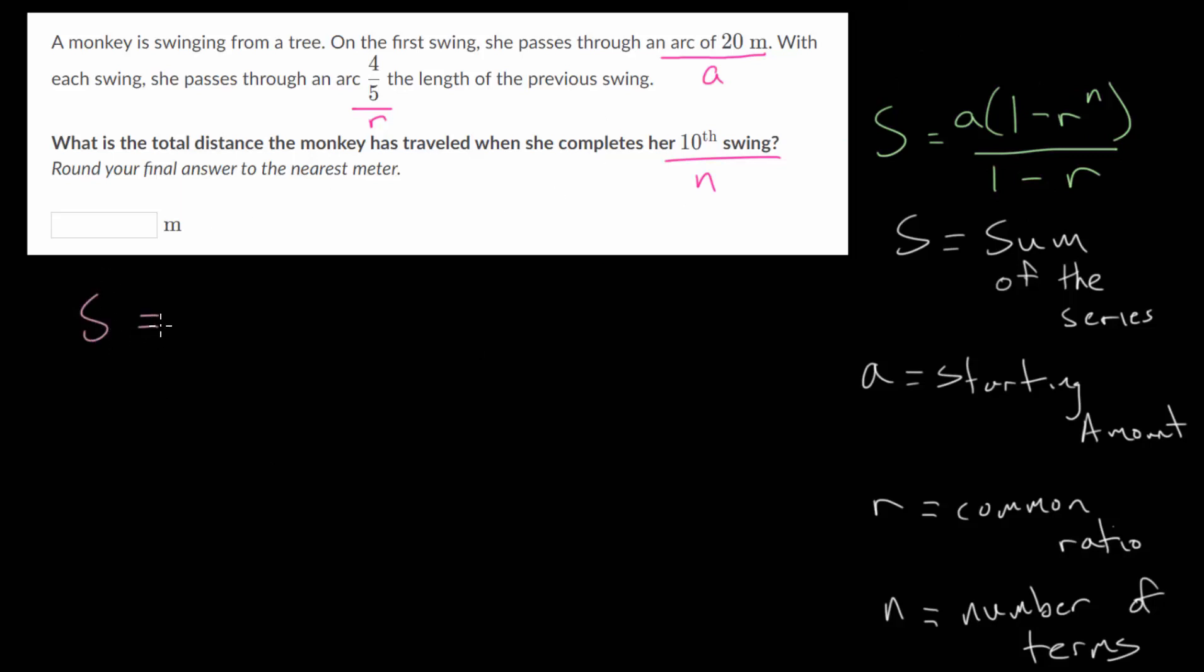So our sum here. Well, the monkey starts with a swing of 20 meters. And then after that, each swing will be 4 fifths the previous swing. So if 20 was the first swing, then the second swing will be 20 multiplied by 4 fifths.